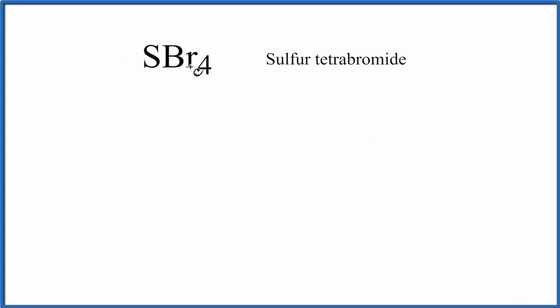To write the Lewis structure for SBr4, sulfur tetrabromide, let's count the valence electrons up. Sulfur is in group 16, sometimes called 6A.